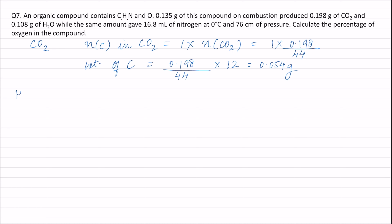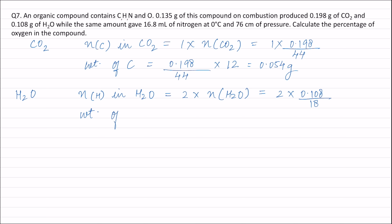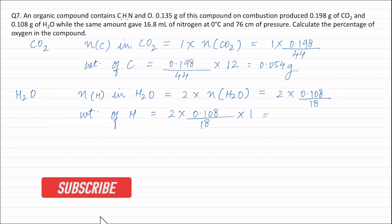The molecular formula of water is H₂O. One mole of water contains two moles of hydrogen, so moles of hydrogen = 2 × (0.108 / 18). Therefore, weight of hydrogen = 2 × (0.108 / 18) × 1 = 0.012 gram.